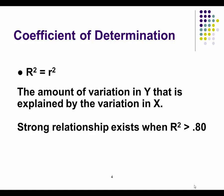When we square the correlation coefficient, we get the coefficient of determination. The coefficient of determination tells us how much of the variation in y can be explained by the variation in x. For example, 80% of the variation in y can be explained by the variation in x.